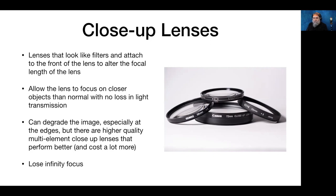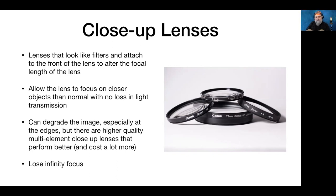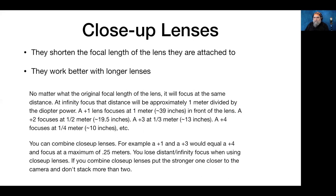A less expensive way is close-up lenses — they look like filters and attach to the front of the lens, altering the focal length to allow you to focus closer than normal. They can degrade the image, especially at the edges, but better quality ones are available. They come in strengths like plus one and plus four, and you can stack them to get even closer. When combining, put the stronger one closer to the camera and don't stack more than two.